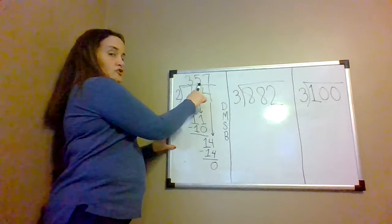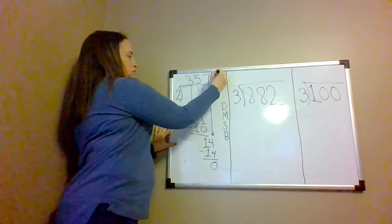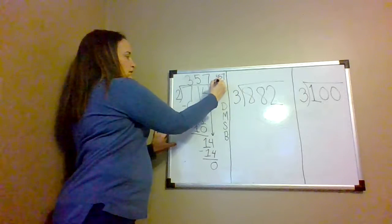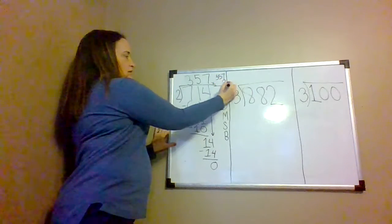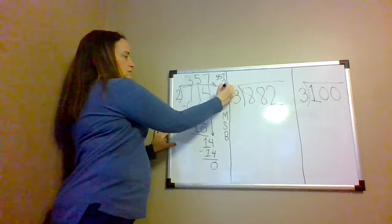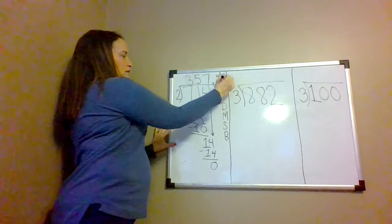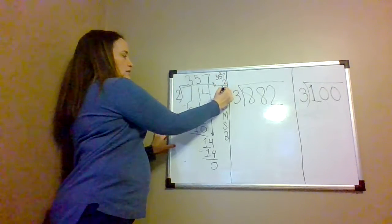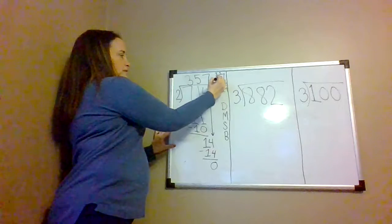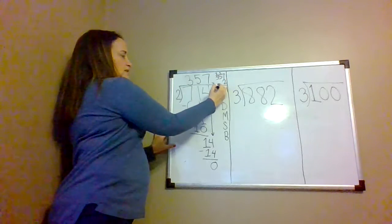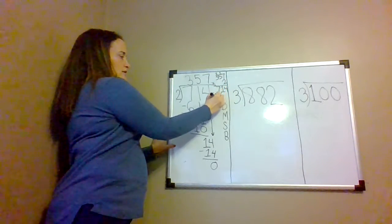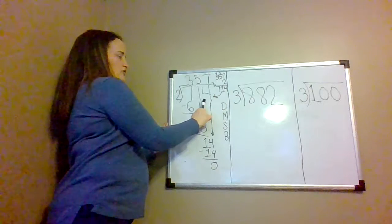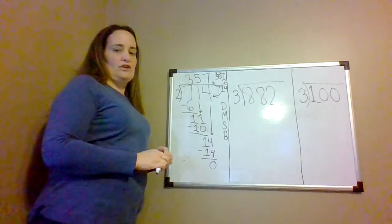To check our work we can multiply 357 times 2. 7 times 2 is 14. 5 times 2 is 10, plus 1 is 11. 3 times 2 is 6, plus 1 is 7. The product matches the quotient, so it's correct.